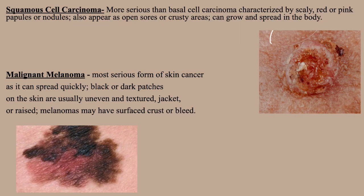Squamous cell carcinoma is more serious than basal cell carcinoma. It is characterized by scaly, red or pink papules or nodules, and may also appear as open sores or crusty areas that can grow and spread in the body. Malignant melanoma is the most serious form of skin cancer, as it can spread quickly. Black or dark patches on the skin are usually uneven and textured, jagged or raised, and melanomas may have surface crust or bleed.